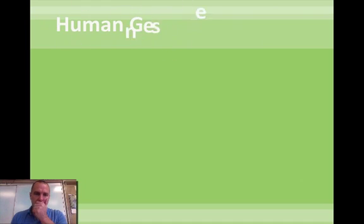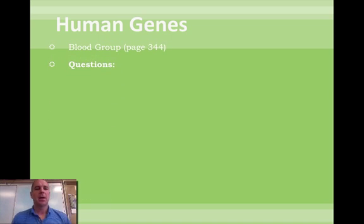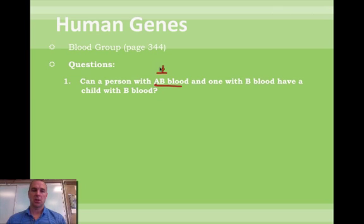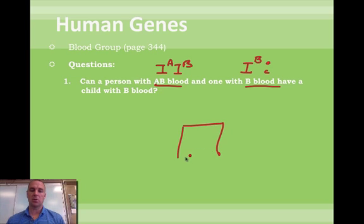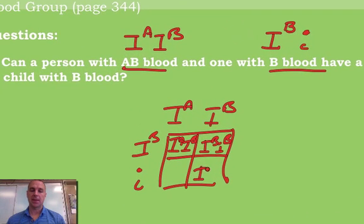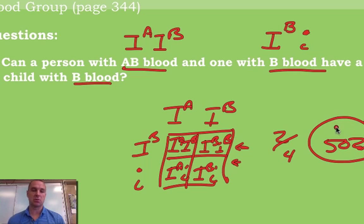Let's go through a few questions with ABO blood types. Can a person with AB blood and one with B blood have a child with B blood? A person with AB blood would be capital I-A, capital I-B. A person with B blood — if I don't tell you whether it's homozygous or heterozygous, always use the heterozygous individual, which is capital I-B, little i. We do a Punnett square: they can have a child with AB, B, B, or A. So yes, they can have a child with B — actually two out of four, or 50% of the time.